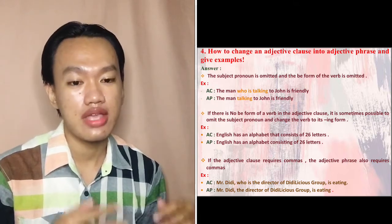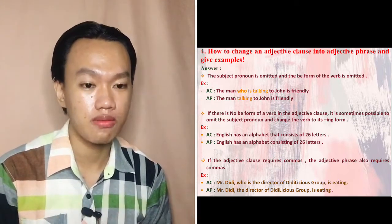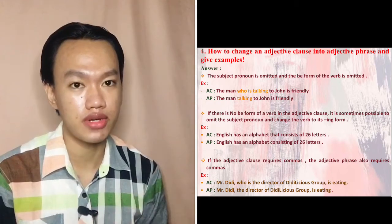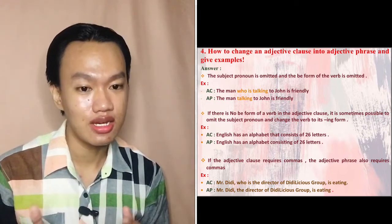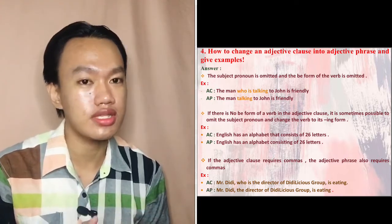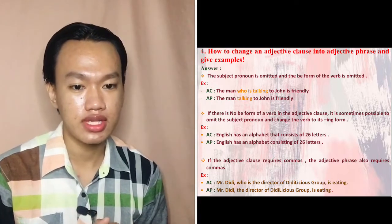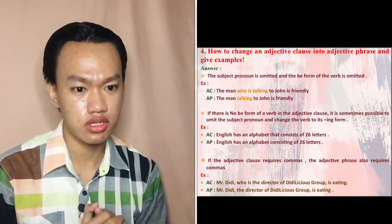Third rule: if the adjective clause requires commas, the adjective phrase also requires commas. Example — adjective clause: 'Mr. Diddy, who is the director of the Delicious Group, is eating.' Adjective phrase: 'Mr. Diddy, the director of the Delicious Group, is eating.' That's all — I'm sorry if I made many mistakes. I take full responsibility. Thank you. I'm Ardiansyah, wassalamualaikum warahmatullahi wabarakatuh.